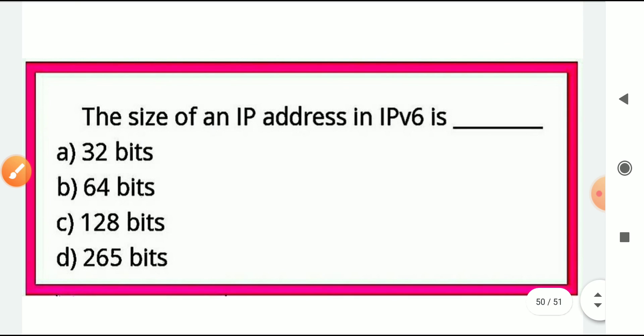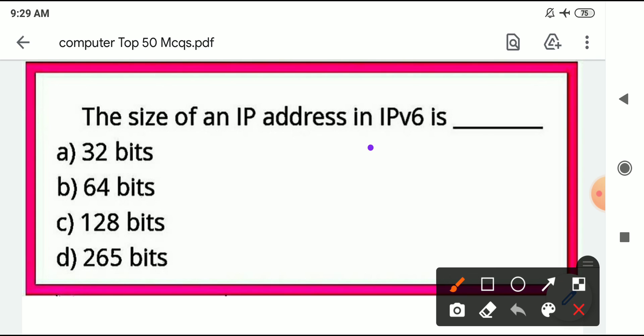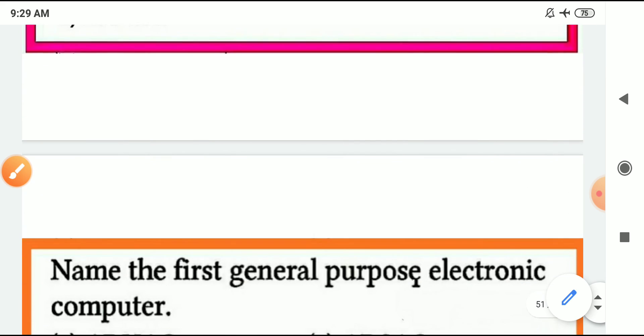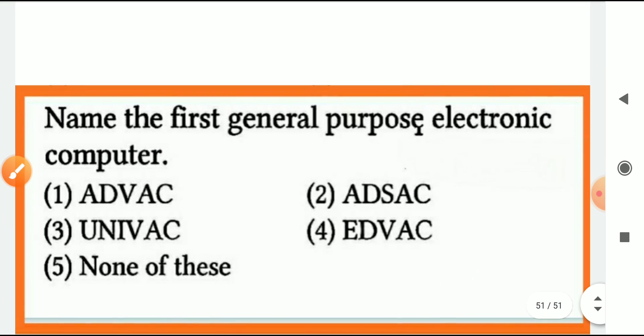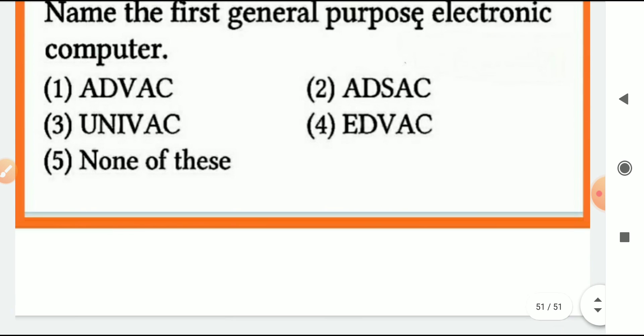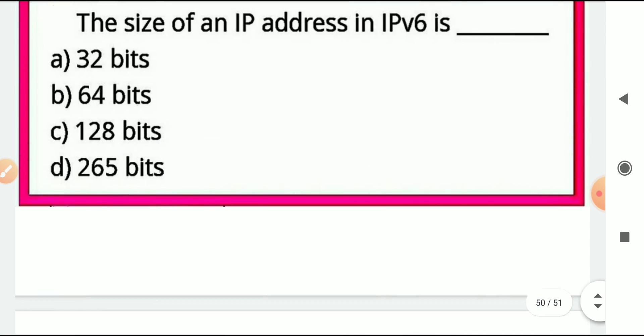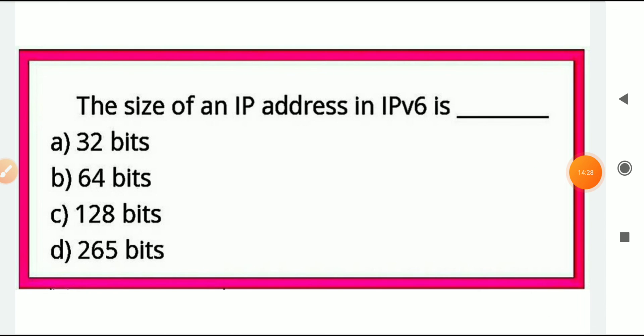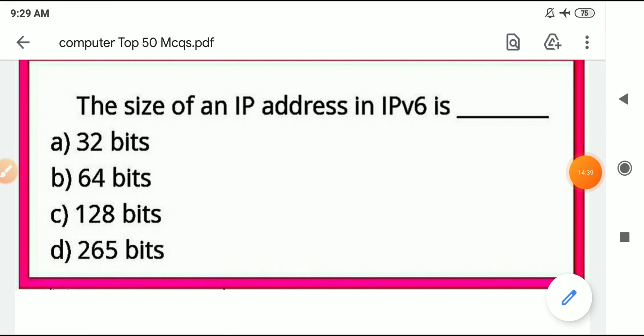The size of an IP address version 6 - IP address version 4 is 32 bits and version 6 is 128 bits. This is an important question. Next is the name of the first general purpose electronic computer - UNIVAC. So this is all about from today's lecture. If you like this, keep watching our videos and subscribe to the channel and share the channel. Link is in the description. You can join us in the description of the video. Thank you.